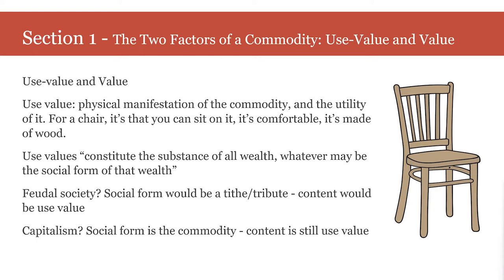He continues: use values become a reality only by use or consumption. They also constitute the substance of all wealth, whatever may be the social form of that wealth. In the form of society we're about to consider, they are also the material depositories of exchange value. Here he starts to distinguish between form and content. Use values constitute the substance of all wealth whatever the social form. If we think about a feudal society, the social form of wealth would be a tithe or tribute the peasant pays to the lord, while the content would still be the use value—maybe a sack of wheat. In capitalism, that sack of wheat would still be a use value, but it has taken on a different social form: the commodity.